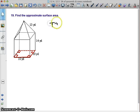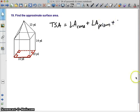So we're going to map out our plan. We have our total surface area: the lateral area of a cone, plus the lateral area of a prism, and then there's just one base right at the very bottom there of the square that I have highlighted.